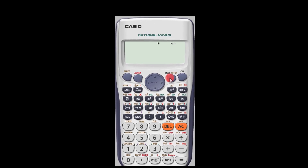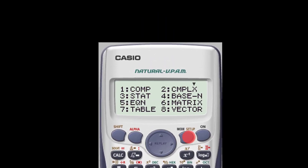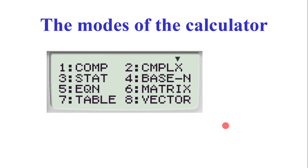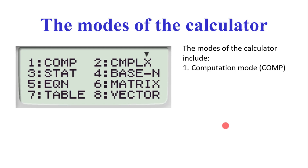If you press the mode key you are going to have this particular list. Let's go and look at them one after the other. Let's start with the first one: the computation mode. This particular mode enables you to actually do basic calculations — one plus one, two plus two, square root — simple expressions that you can write.